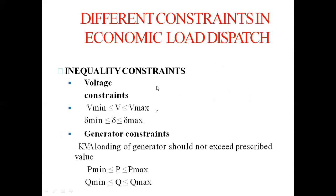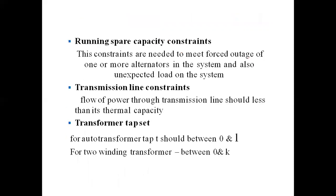Different constraints in economic load dispatch: first is the inequality constraints, that is the voltage constraints — the value of the voltage will lie between the minimum and the maximum value, and the angle delta will also lie between minimum and maximum value. There are also generator constraints — the KVA loading of the generator should not exceed the rated value; active and reactive power both will remain within maximum and minimum values.